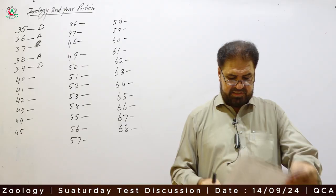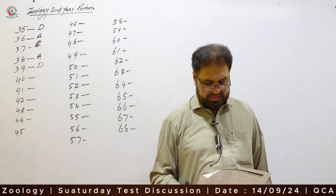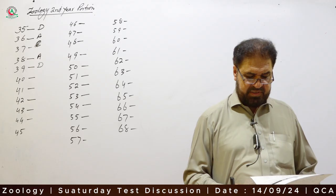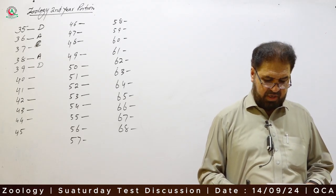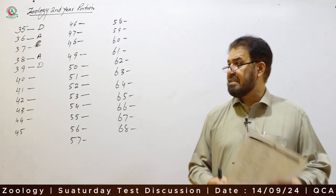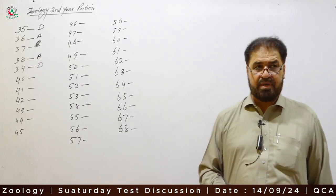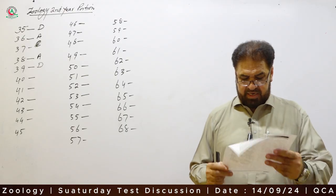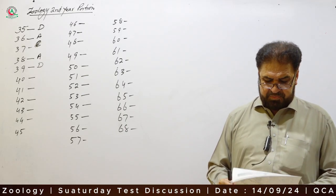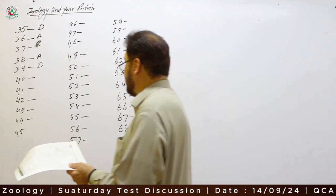Question 40: The right lung represents about how much of the total lung volume? The right lung is slightly shorter and broader than the left one and accommodates about 56% of the total volume. Option C is correct.